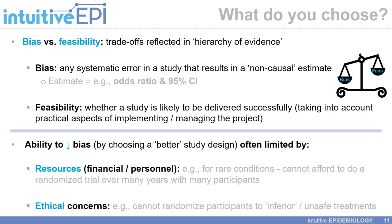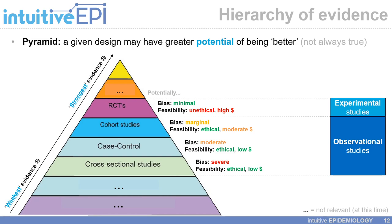This is the hierarchy of evidence, or the evidence pyramid, where the study designs at the top have a greater potential of being less biased. Experimental studies, or randomized controlled trials, are at the top. RCTs have the potential of being minimally biased, but they also have the potential of being unethical or very high cost. In terms of observational studies, the bias may increase as you go down the pyramid, but the feasibility or practicality of doing those studies becomes better.